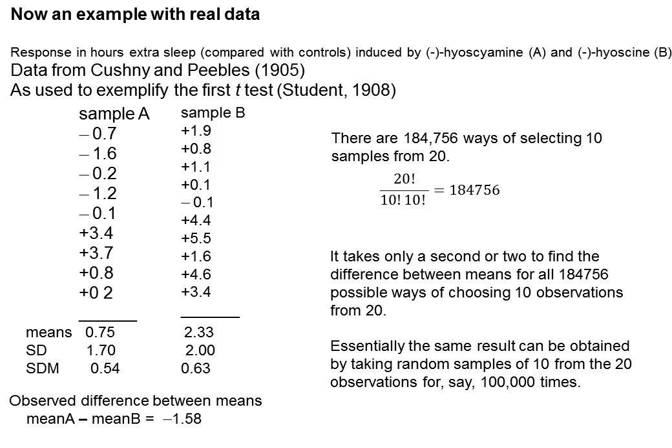If the numbers were still bigger, it might eventually become unfeasible to look at all possible ways of selecting. But you can get essentially the same result by taking random samples of 10 from 20. And if you do it, say, 100,000 times, you get a distribution which is very close to the correct one.